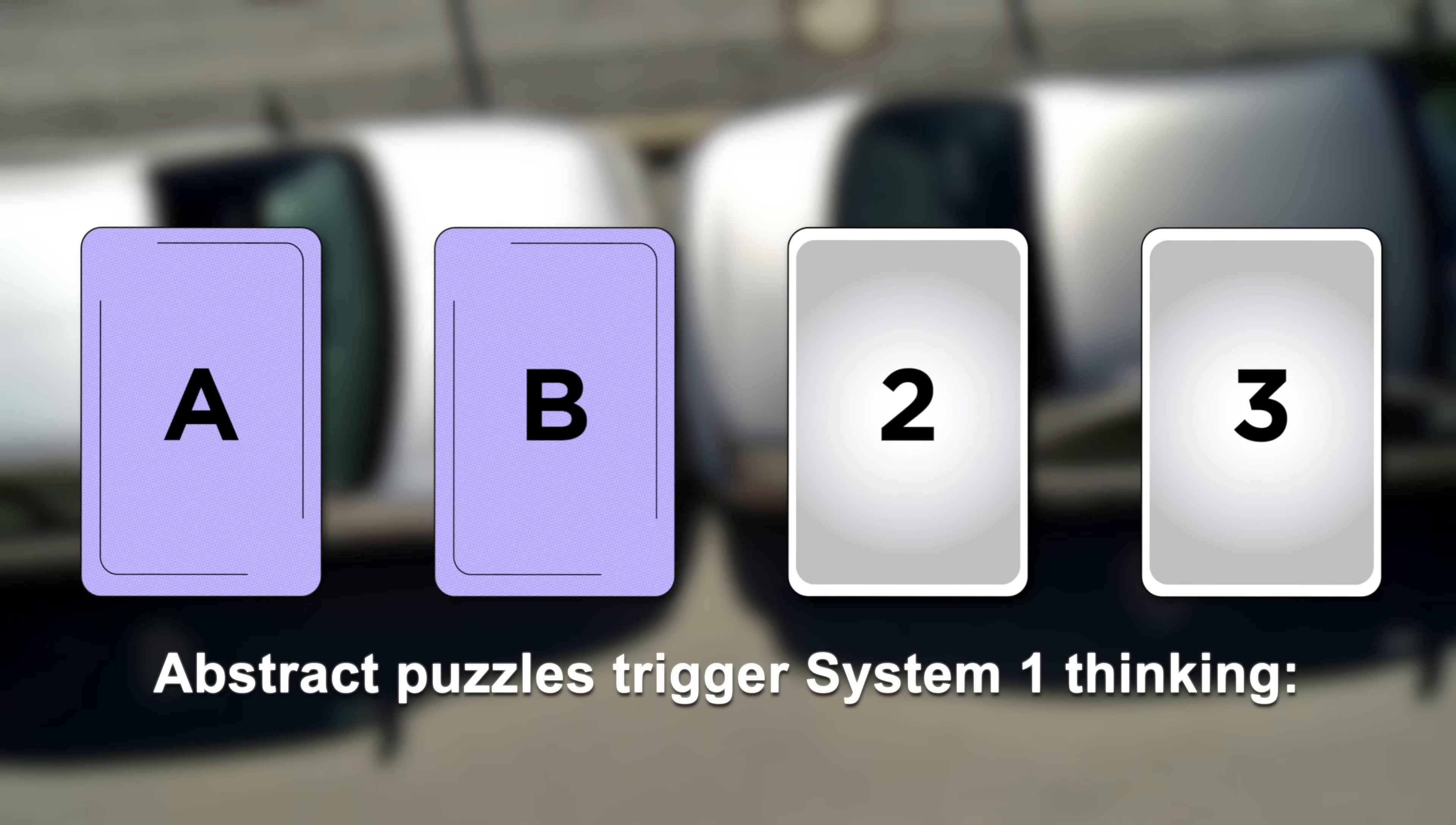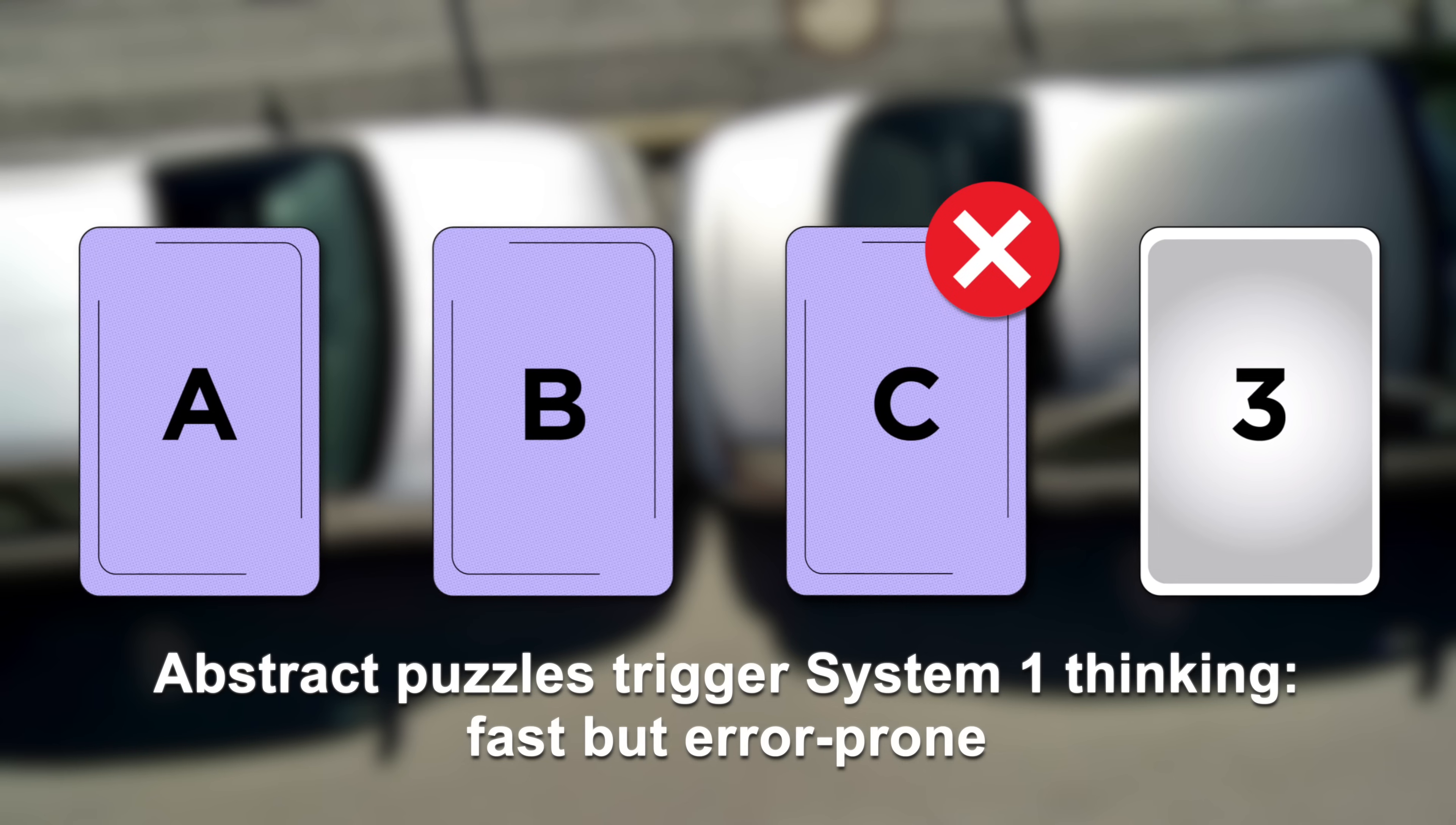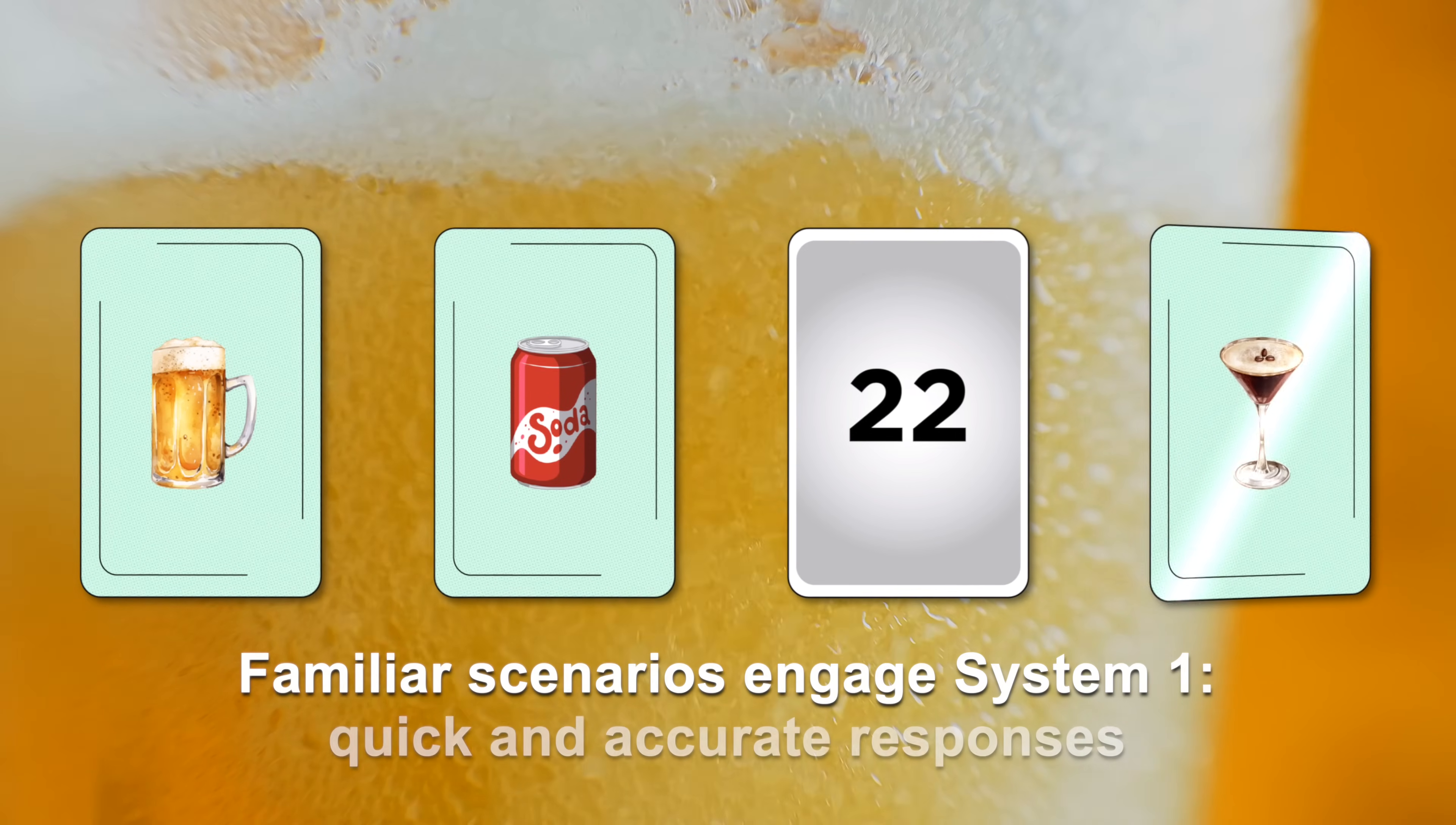In the abstract card puzzle, people often engage System 1, responding quickly yet incorrectly because the problem is unfamiliar. In the real-life bar scenario, System 1 still engages, but because the system is familiar,